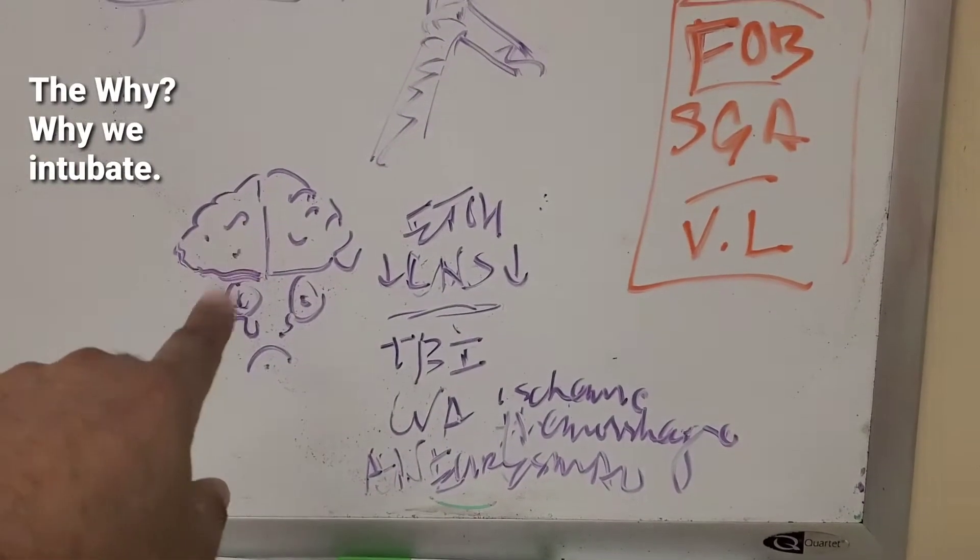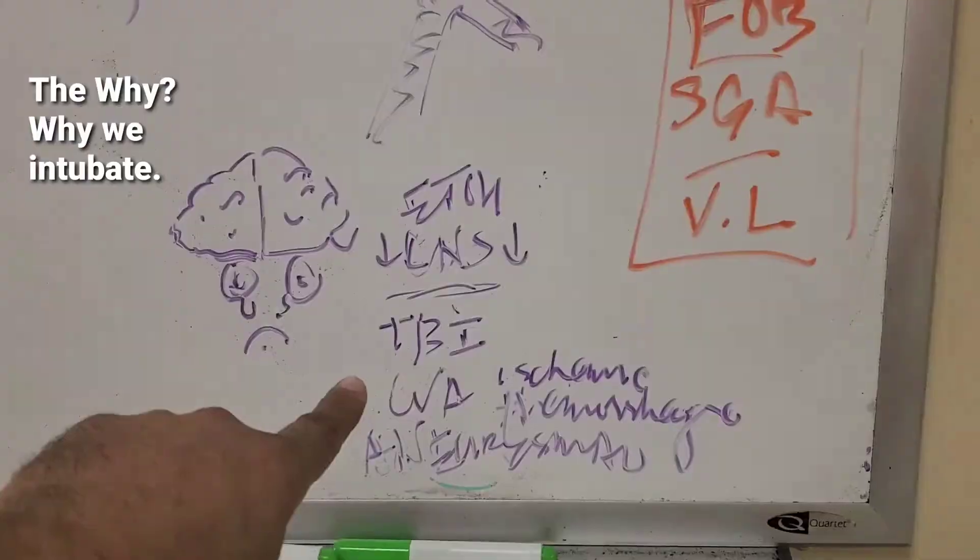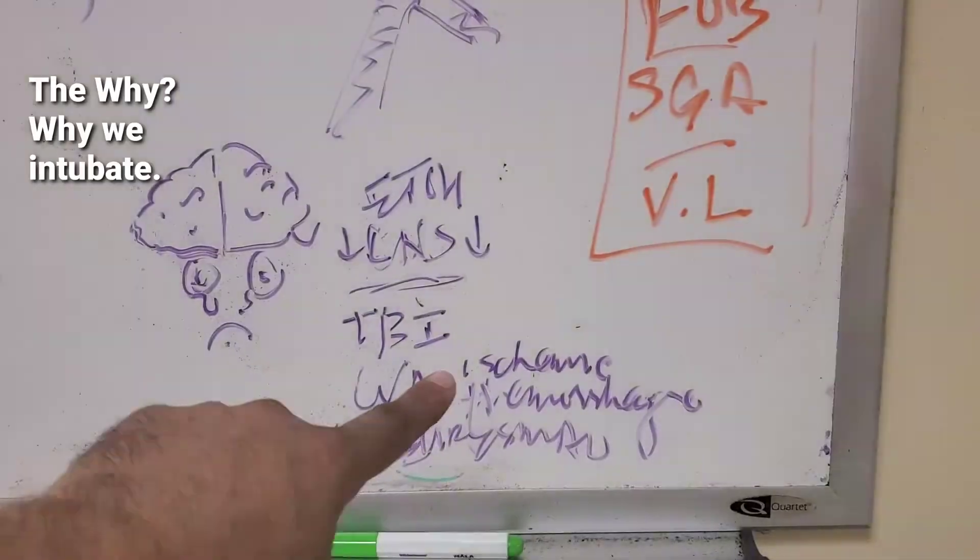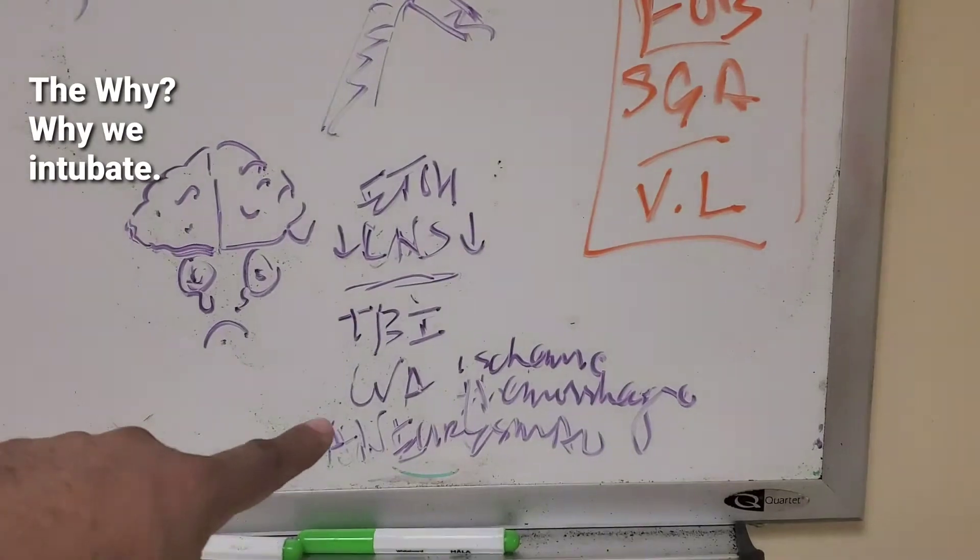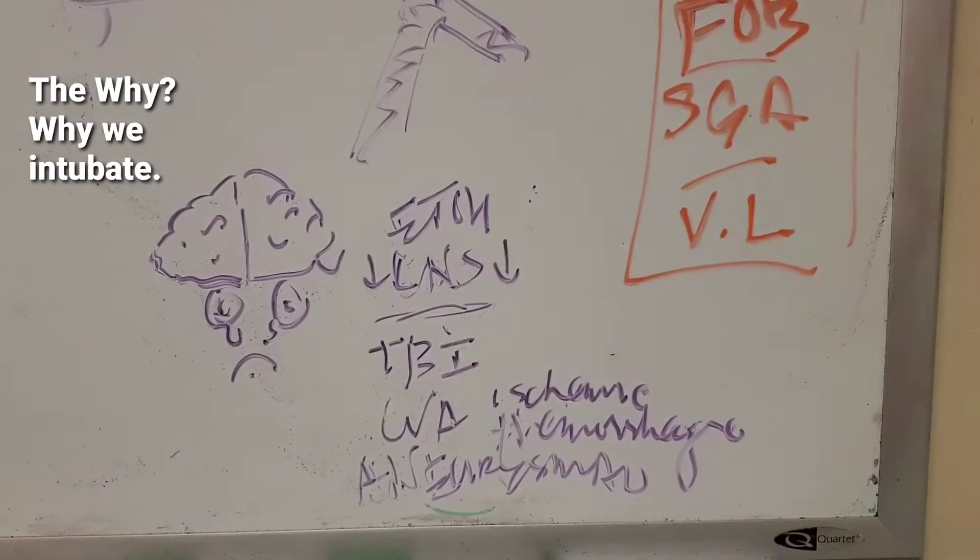So with a rather sad brain, there's no coordination of breathing. A stroke, CVA with ischemic hemorrhagic causes and a ruptured aneurysm.